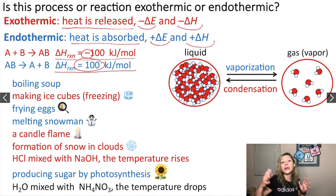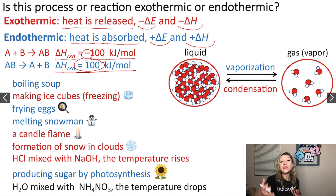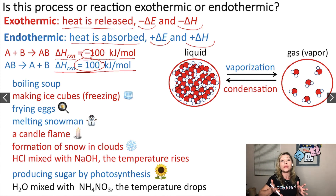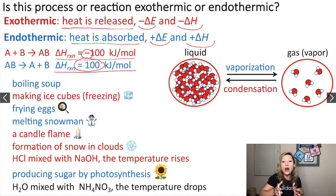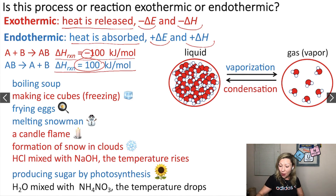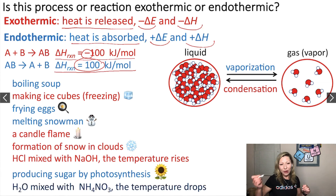Our last example: how about water mixed with ammonium nitrate and the temperature drops? This means that heat was absorbed from the surroundings into our reaction. So this is going to be an endothermic process. I hope this makes sense. See you in the next video.